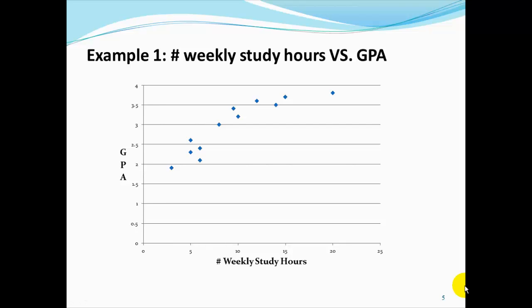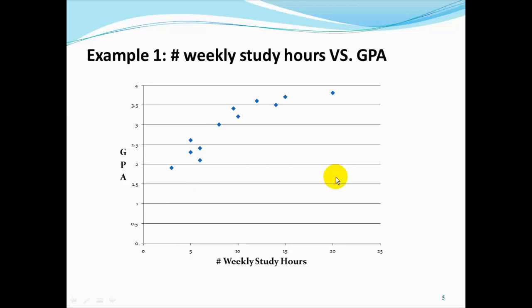If we were to collect a sample of students and ask their number of weekly study hours and their GPA, and then attempt to plot this information by placing the number of weekly study hours — our x variable — on the x-axis, and their GPA on the y-axis, we would expect to see some pattern like this emerge. In general, we would expect that a person that studies less has a lower GPA, and a person that studies more has a higher GPA.